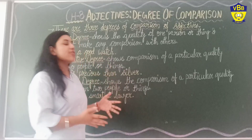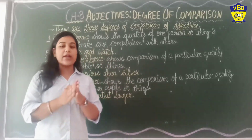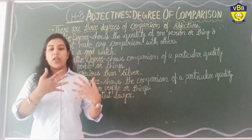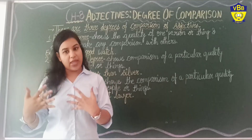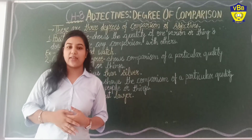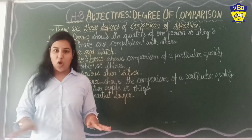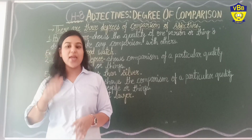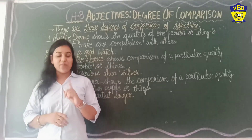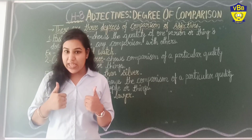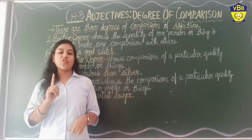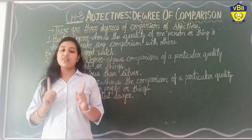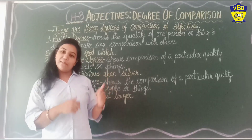We can use all these degrees of comparison under adjectives to show the particular quality of a noun or a pronoun — a person or a thing. I think this topic is clear to you all. Now we will meet in our next class. Kindly watch this video attentively and thoroughly, and please make sure that after watching this video, you complete your exercises as well, which are based on the degrees of comparison.